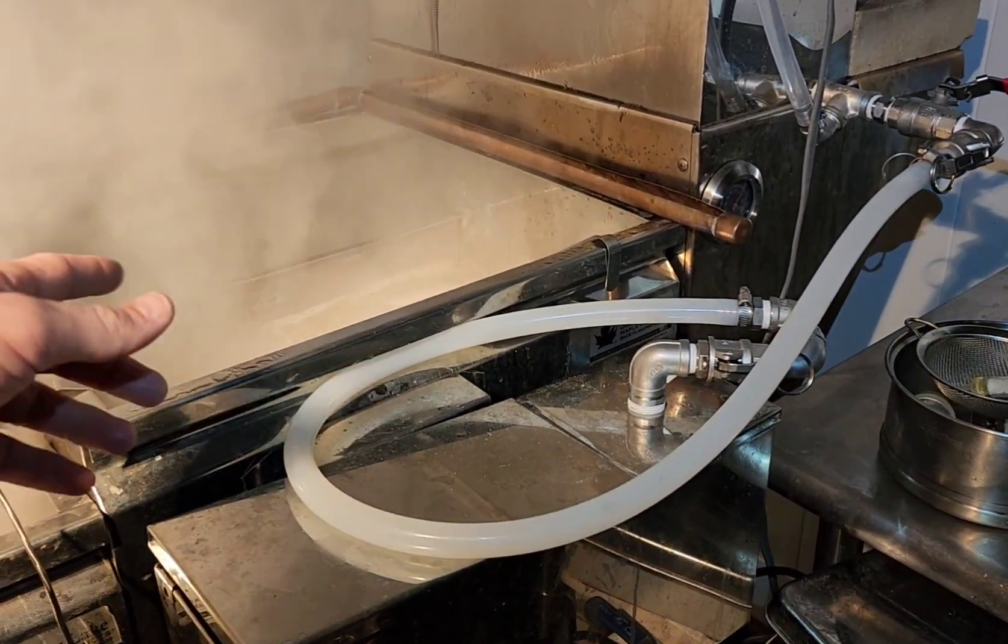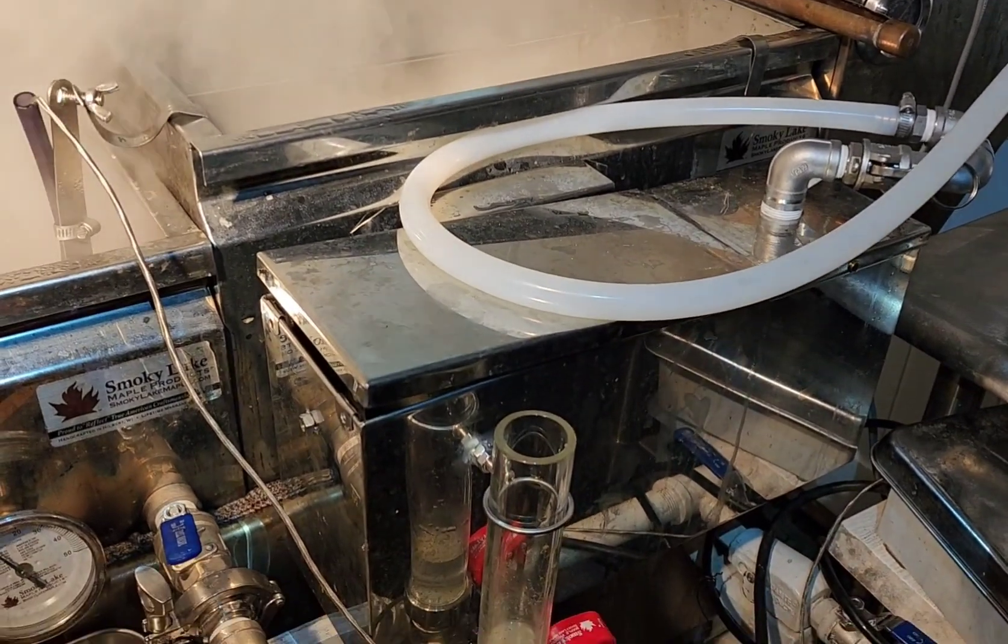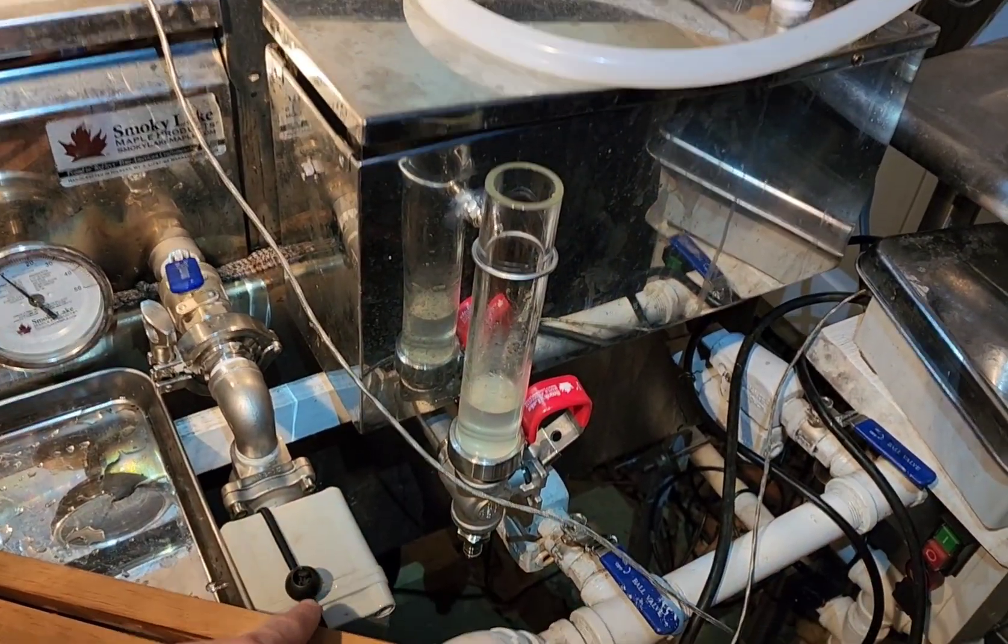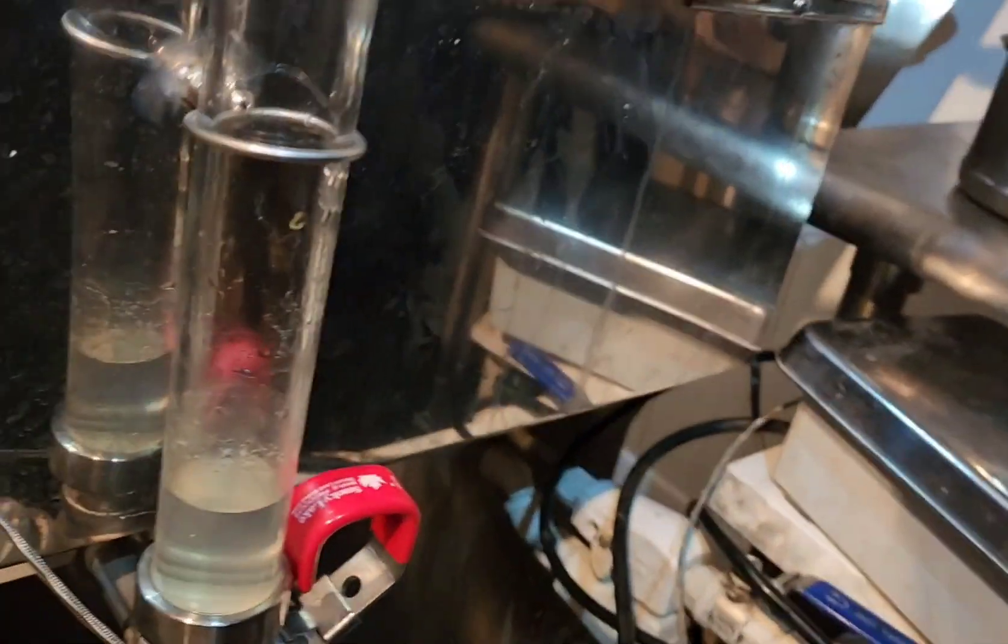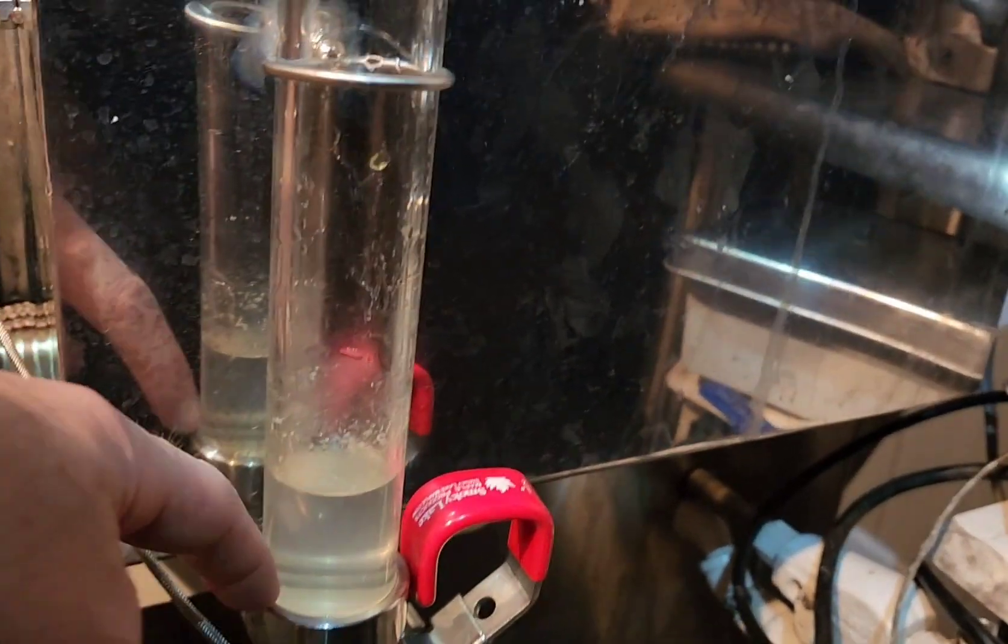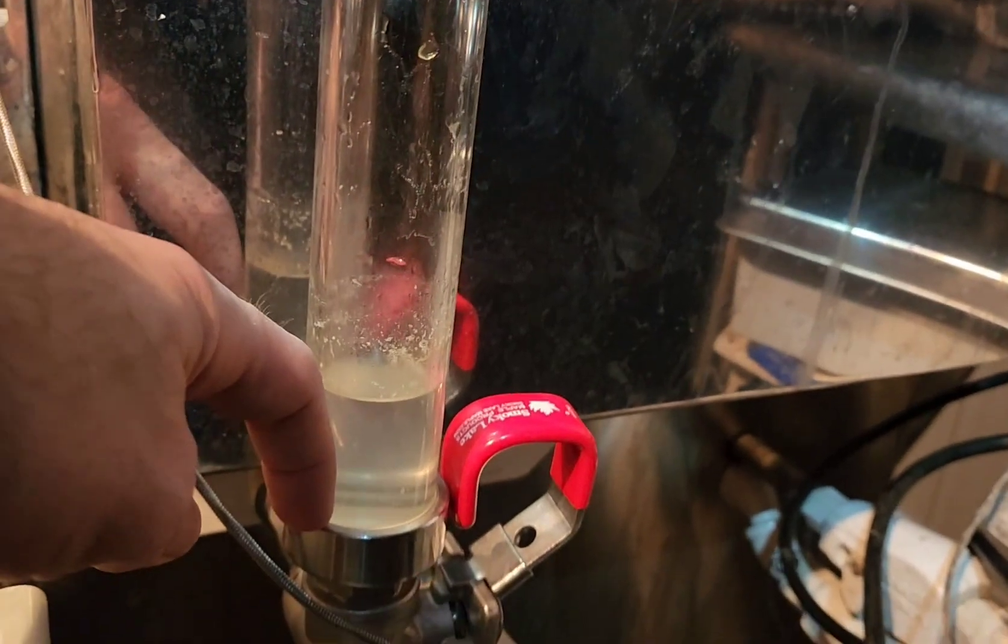This float box will flip over to the other side. Our draw-off valve right here, our automatic draw-off valve, will also flip over to the other side. This sight glass tells us how much sap we have, the depth of sap in our pans.